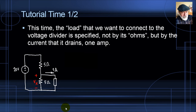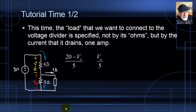The voltage across the top 5-ohm resistor is 20 − Vx. The current through the bottom resistor (in blue) is Vx/5 by Ohm's Law, and the current in the top resistor is (20 − Vx)/5. Applying KCL to the middle node: (20 − Vx)/5 = Vx/5 + 1. Solving for Vx gives 7.5 volts — it is no longer 10 volts.